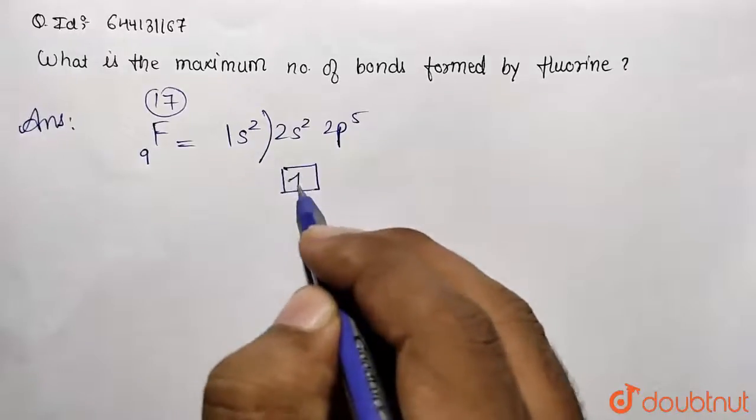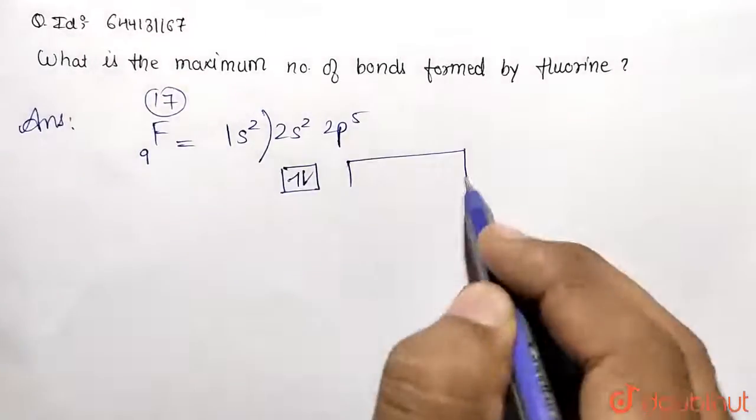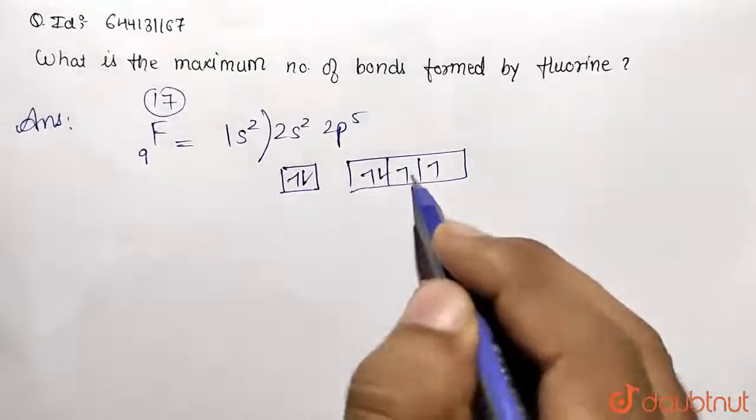If I want to show that orbital diagram, this is containing 2 electrons, and this p is containing 5 electrons: 1, 2, 3, 4, and 5.